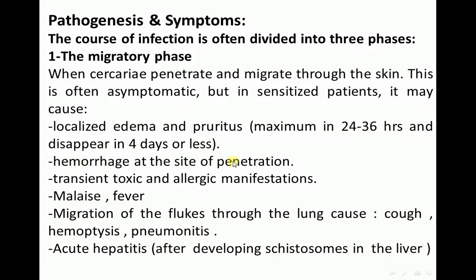There may be hemorrhage at the site of penetration, transient toxic and allergic manifestations, malaise, and fever. Migration of the fluke through the lung causes cough, hemoptysis, and pneumonitis. Acute hepatitis could occur after the schistosomes develop in the liver.